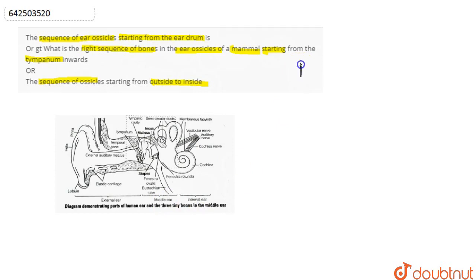And the middle ear basically contains three tiny bones. It consists of three tiny bones.